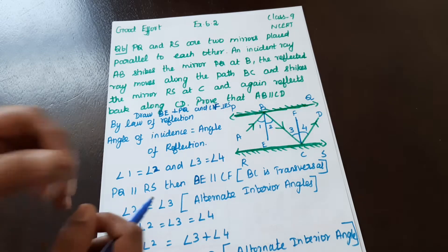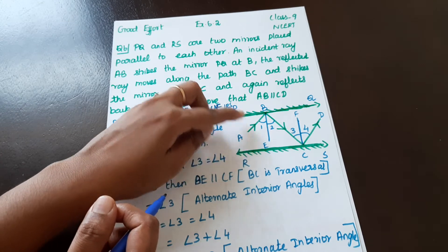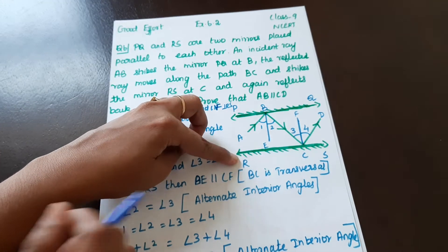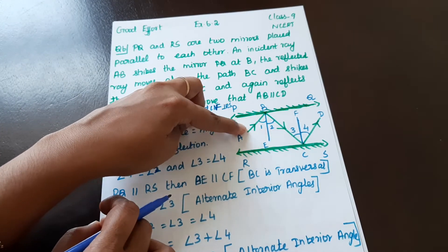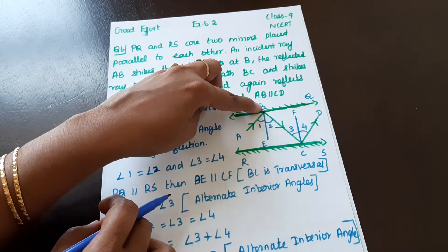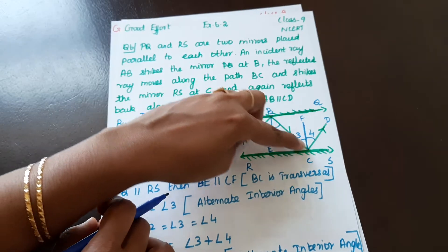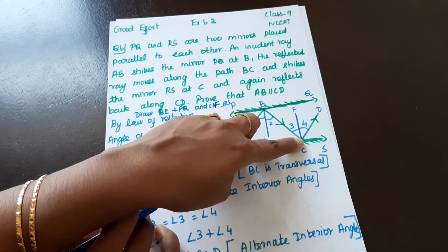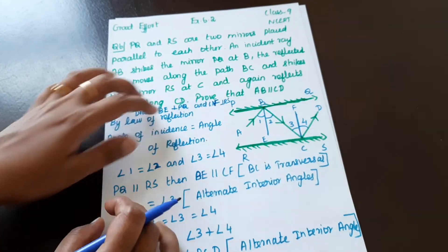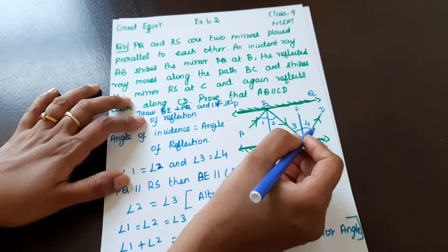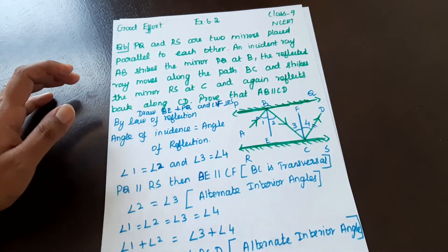So PQ and RS mirrors are parallel. AB is the incident ray. The incident ray strikes PQ mirror at point B and then strikes RS mirror at point C. We need to prove AB parallel to CD.